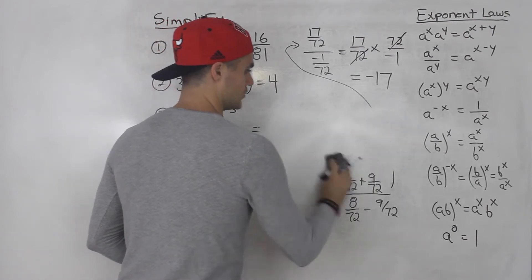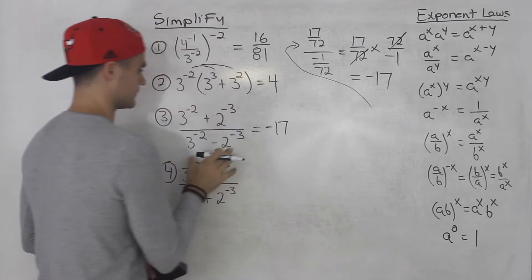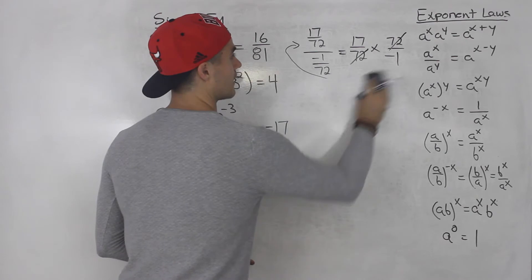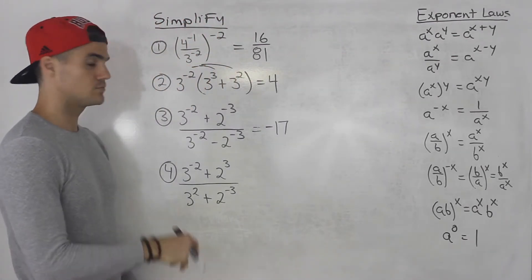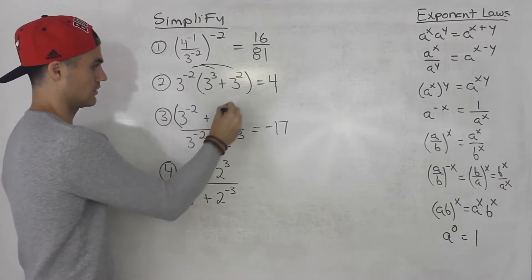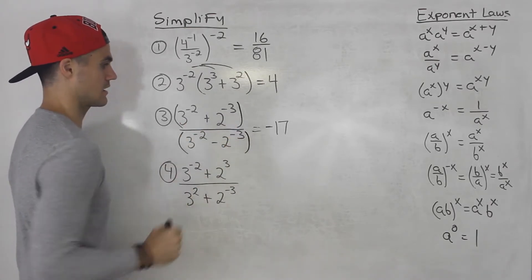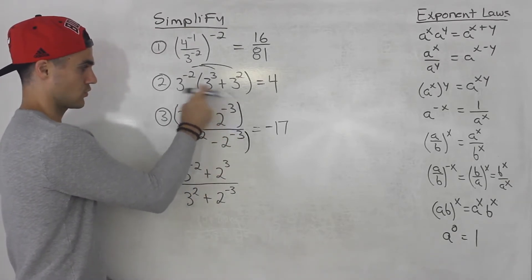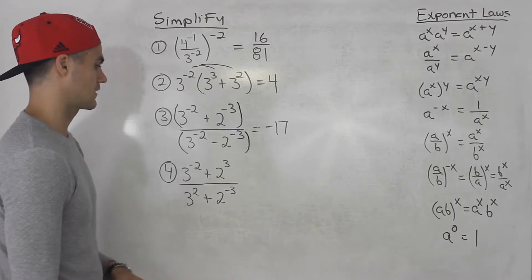You can check your answer in the calculator. If you take this and plug it in, you should get negative 17. When you do plug these expressions into your calculator, make sure that the numerator is in brackets and the denominator is in its own brackets as well. As long as you put brackets for the whole numerator divided by the whole denominator, you should get that answer of negative 17.